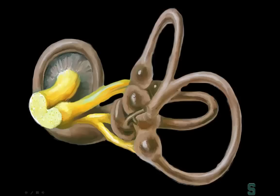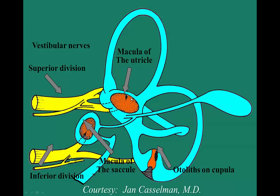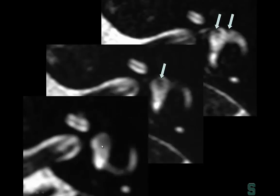We can now see the macula of the utricle. When we talk about balance, the otoliths are located in the saccule and utricle. On heavily T2-weighted images, you can see a small area of increased signal within the vestibule in three planes. We've described the normal morphology — one to two millimeter thicknesses involving the macula of the utricle.